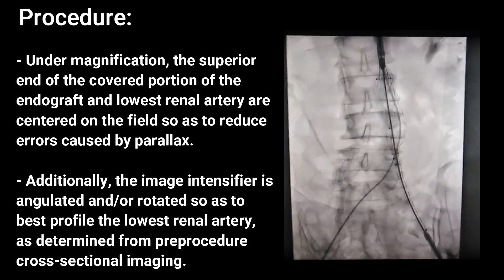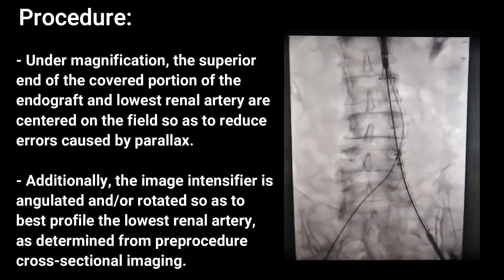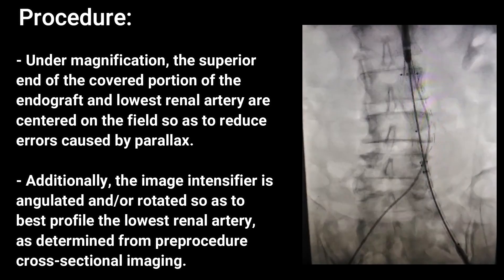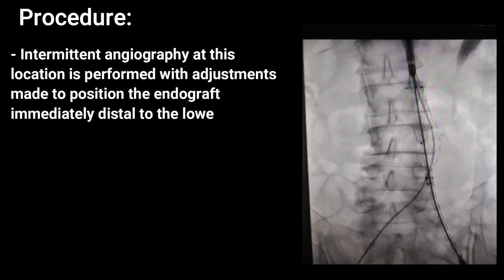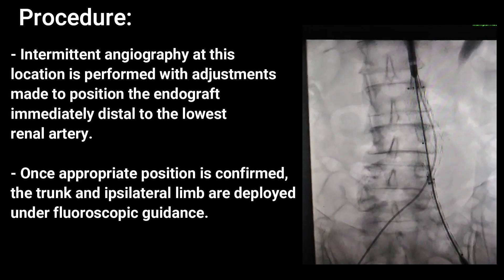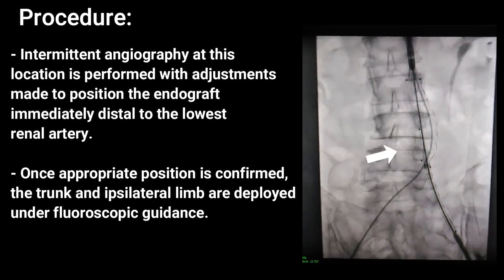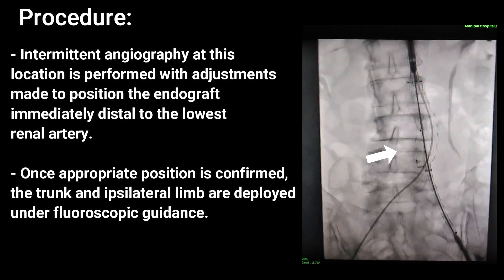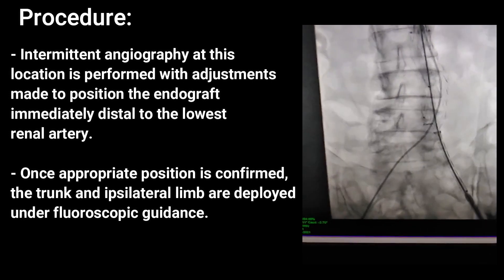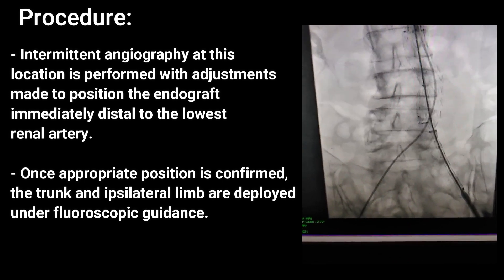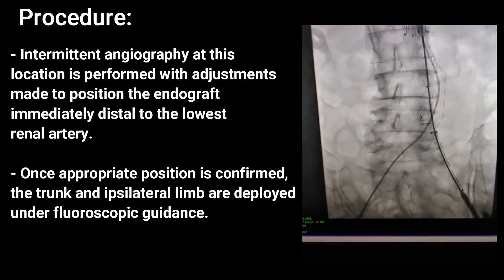The image intensifier is angulated and rotated to best profile the lowest renal artery, as determined from pre-procedure cross-sectional imaging. Intermittent angiography is performed at this location, with adjustments made to position the endograft immediately distal to the lowest renal artery. Once appropriate position is confirmed, the trunk and ipsilateral limb are deployed under fluoroscopic guidance.